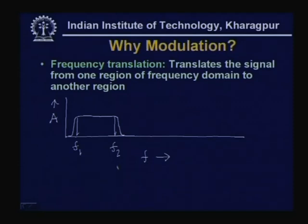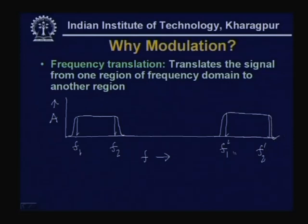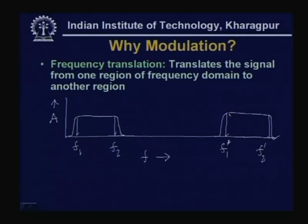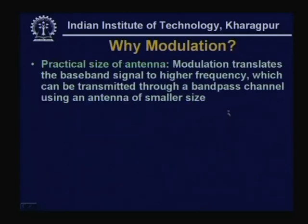The information content of the translated signal is such that the original signal can be recovered from it. One important benefit of this is that you will be able to use an antenna of practical size. Whenever you translate a baseband signal to a higher frequency for transmission through a band-pass channel, a smaller antenna can be used. For example, a 1 kHz signal has a wavelength of 300,000 meters, making a proportional antenna completely impractical.